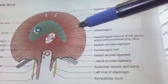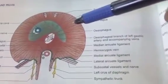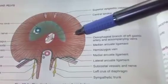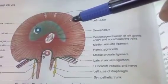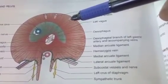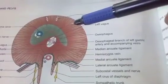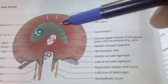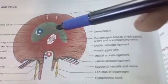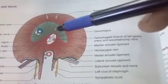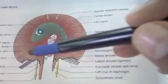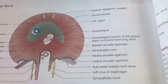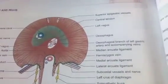The diaphragm has both sensory and motor nerve supply. It is supplied with motor fibers by the phrenic nerve via ventral rami of C3, C4, and C5. For the central part of the diaphragm, the phrenic nerve is also the sensory supply, whereas for the peripheral part of the diaphragm, the lower six thoracic nerves are the sensory nerves.